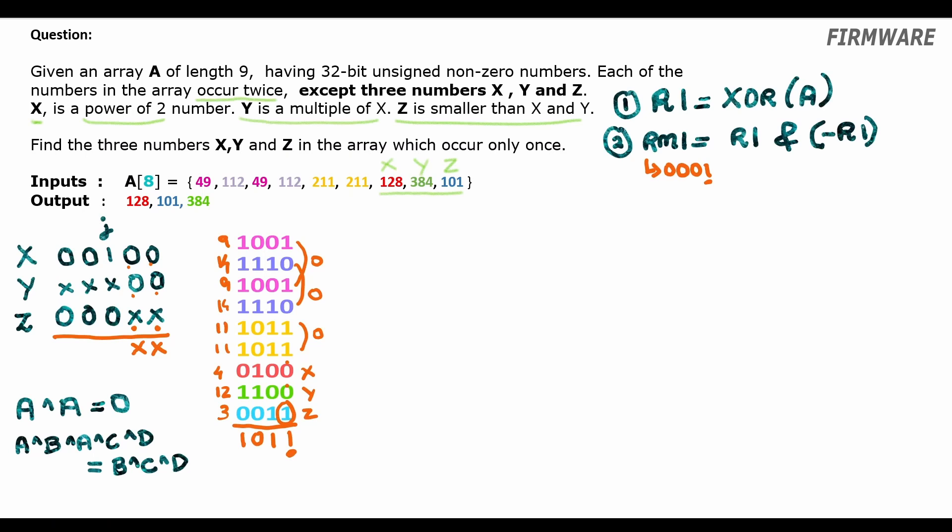Now, to find Z, we will do XOR of all the numbers in the array which also has set bit in the position of the rightmost set bit in result one. Therefore, in this XOR, X and Y will be excluded, but some of the other numbers in the array which occur twice will be included. Since we have rightmost set bit as the LSB, therefore, we will have 9 XOR 9 XOR 11 XOR 11 XOR 3. 9 XOR 9 is 0, 11 XOR 11 is 0, 0 XOR 0 XOR 3 is 3. And this way, we will find our answer Z.